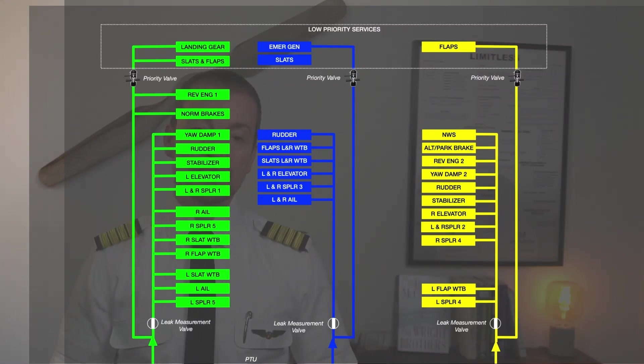The green system has the majority of the primary normal operation of the services. We can highlight here that the green system has the landing gear, the normal operation of the flaps and the slats, together with normal braking.